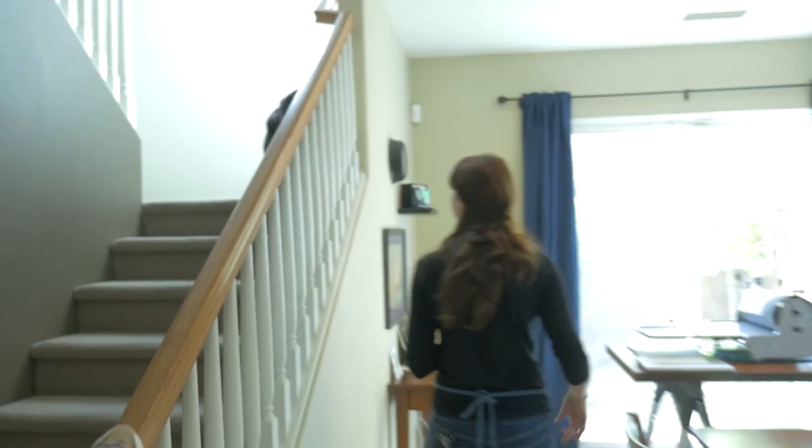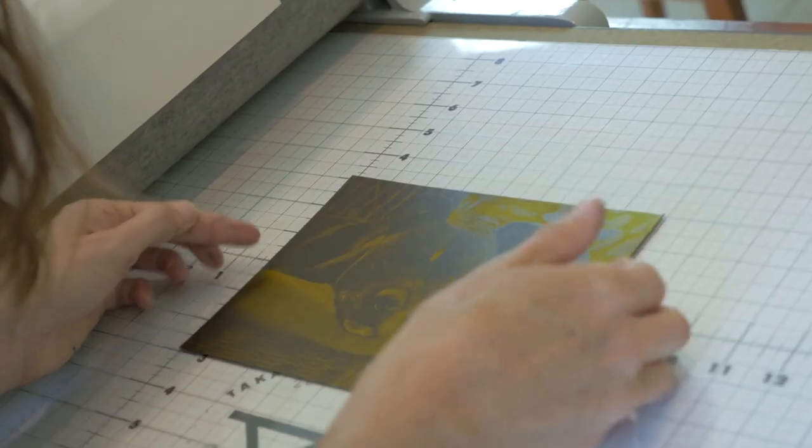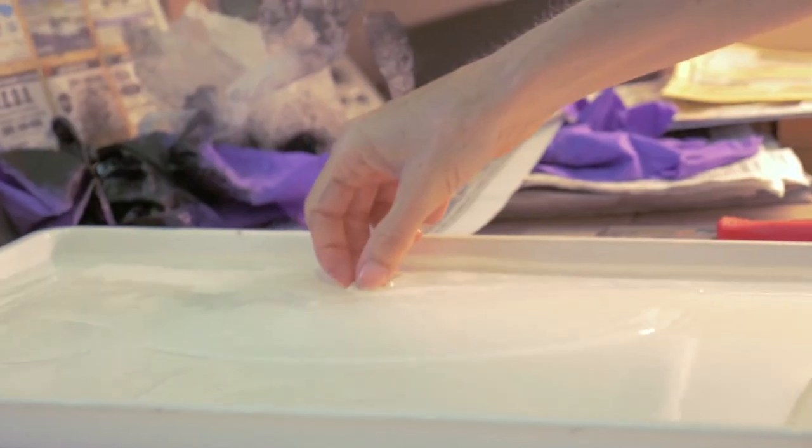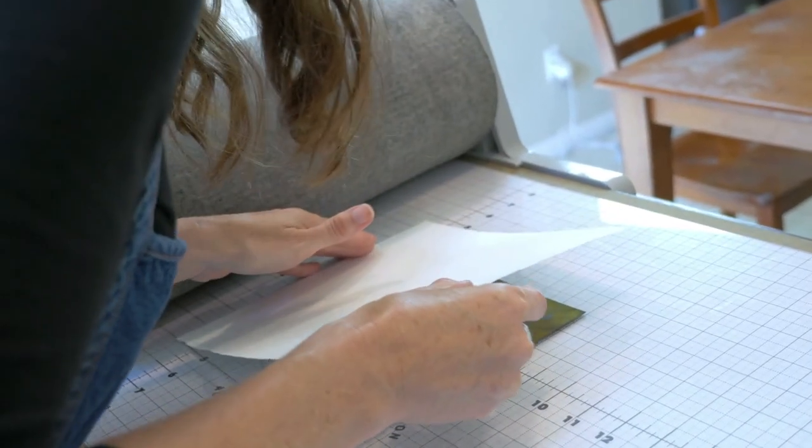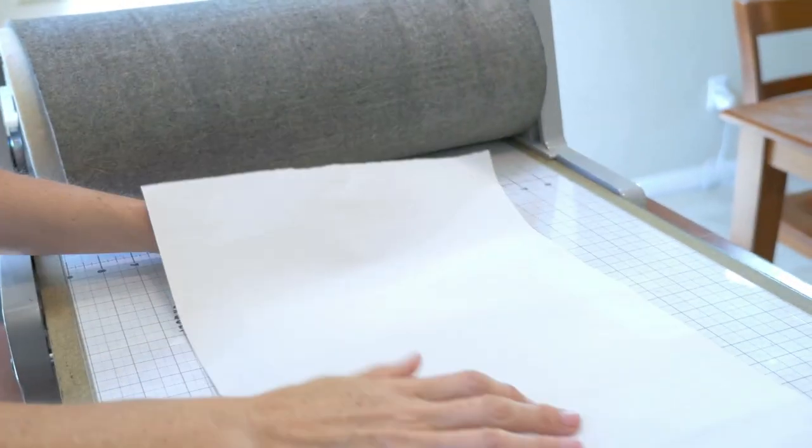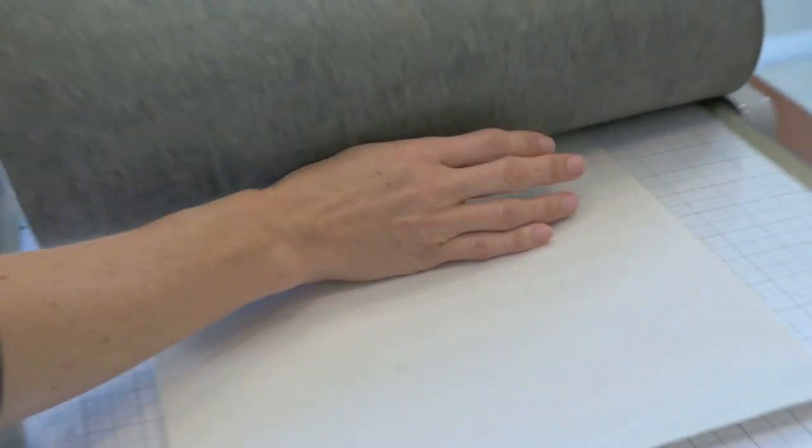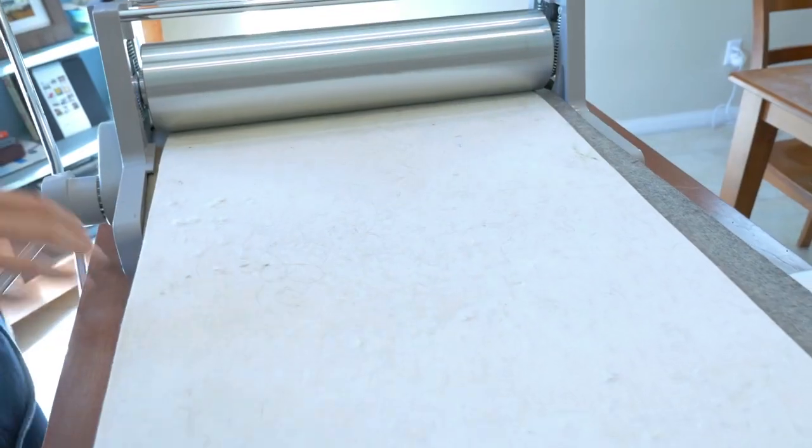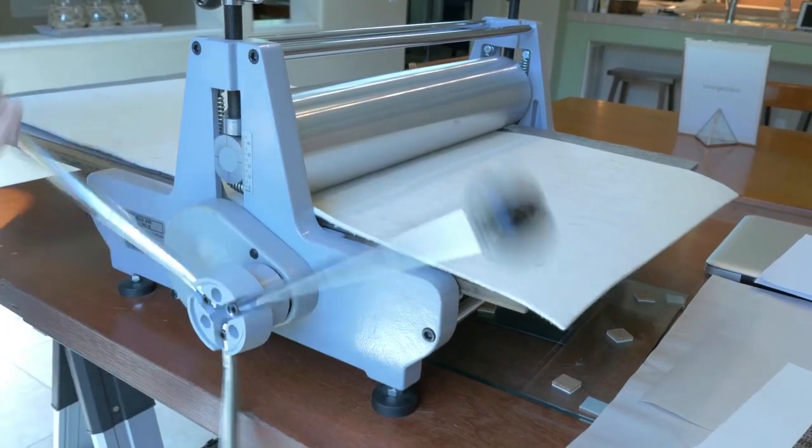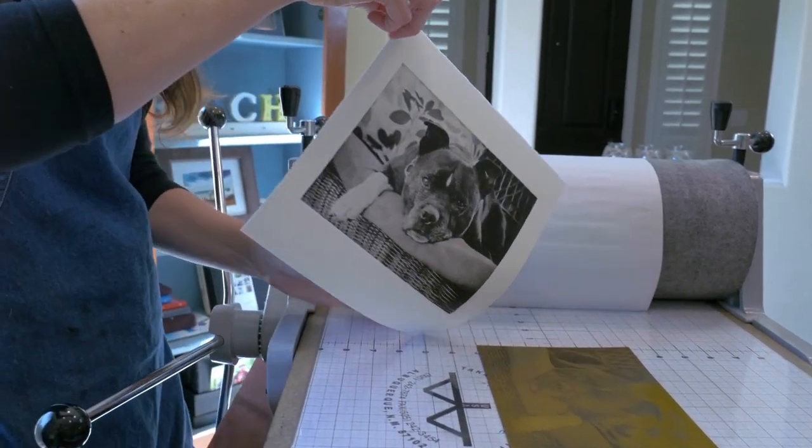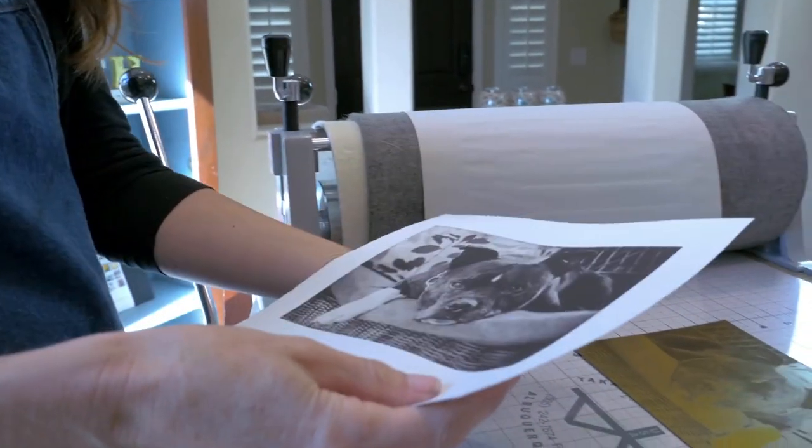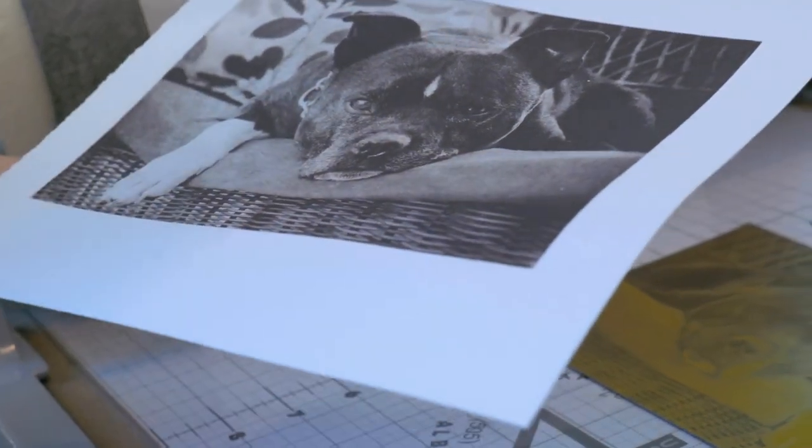Fine art paper here that's soaking in the tray. It needs to be wet when we pair it with the inked plate. I've got to line it up right and make sure it's even. Awesome. Beautiful.